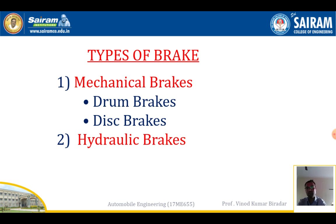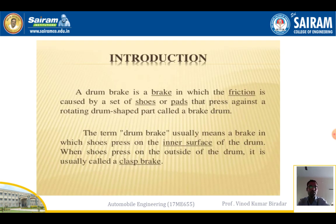A brake is a device with the help of which we can stop the vehicle, or retard the motion of a vehicle. Drum brakes use friction caused by pads to stop the vehicle. The definition says: a drum brake is a brake in which the friction is caused by a set of shoes or pads that press against the rotating drum-shaped part, called the brake drum.